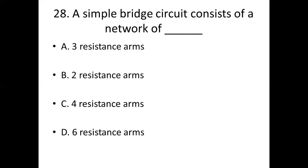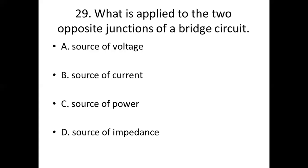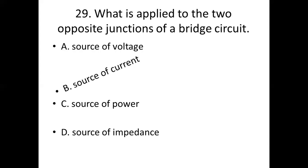Twenty-ninth one. What is applied to the two opposite junctions of a bridge circuit? Option A: source of voltage. Option B: source of current. Option C: source of power. Option D: source of impedance. Answer: Option B, source of current.